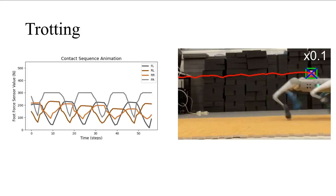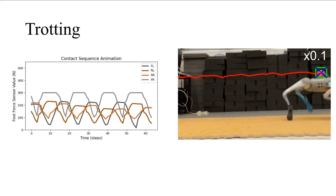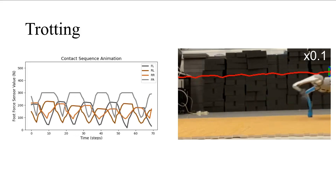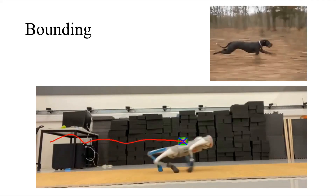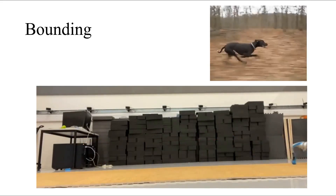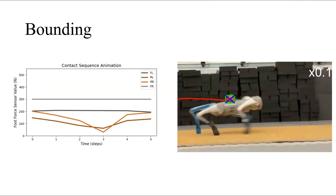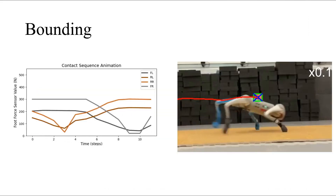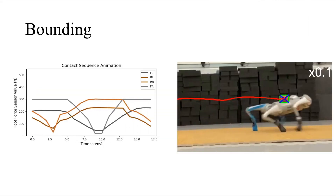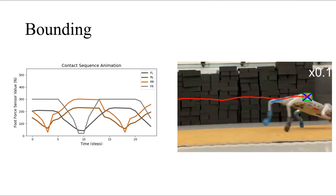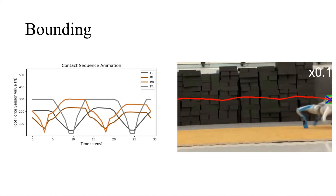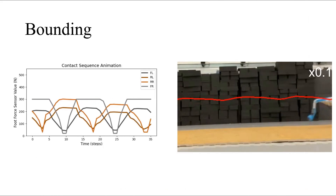To evaluate stability, we use OpenSV to track the robot's base fluctuation. We also record the feet force sensor's output to visualize the robot's gait pattern.